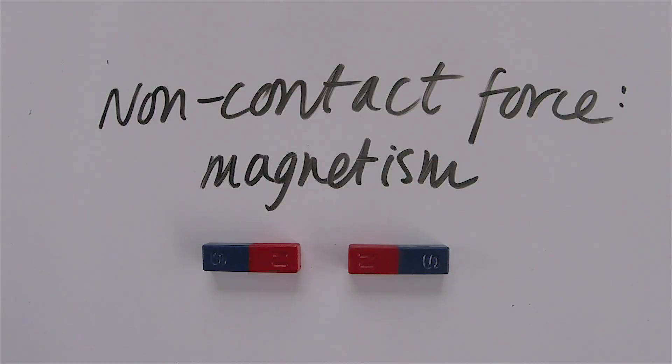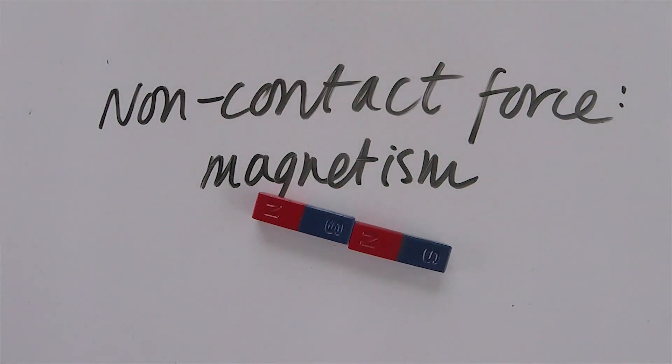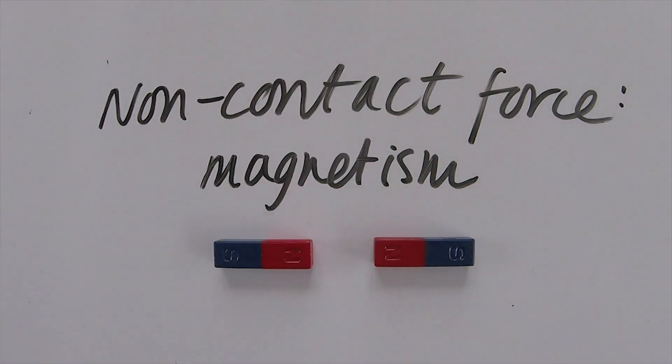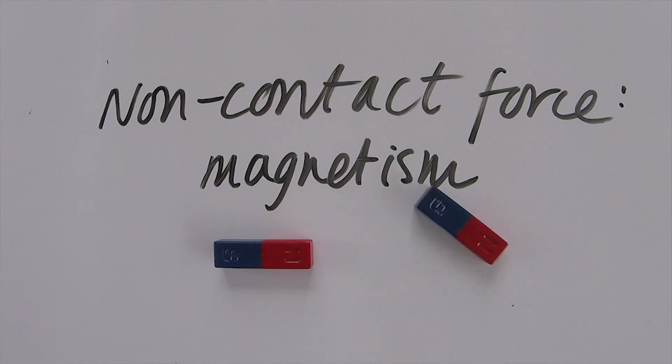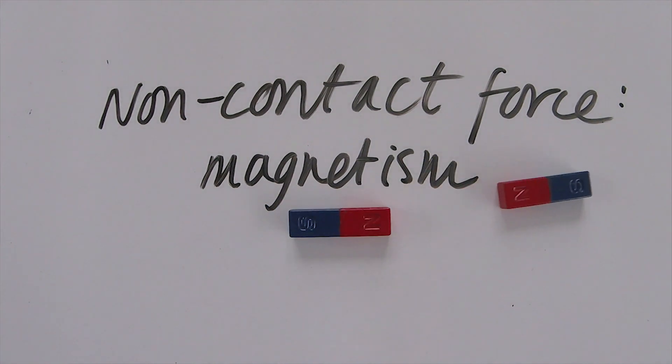And then the other non-contact force is magnetism. Two magnets don't need to touch in order to feel that force. You'll remember from maybe year seven or eight: like poles repel and unlike poles attract — that's where the phrase 'opposites attract' comes from.